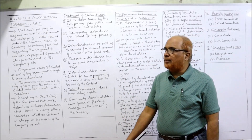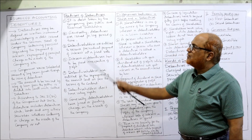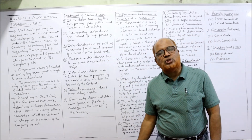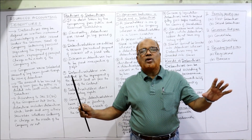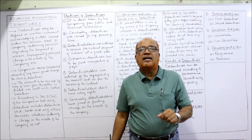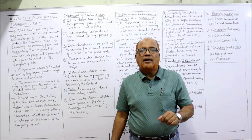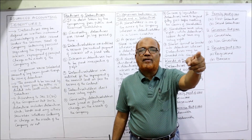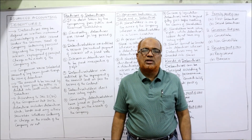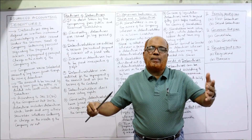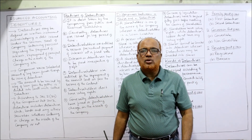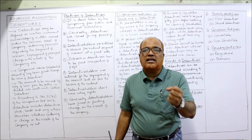Now, features of debentures. The first feature: it is a debt taken by the company from the public and financial institutions. Remember, it is not the owner's money — it is a debt. Debt taken by the company from the public or from financial institutions. That means debentures can be issued to the public or to financial institutions.